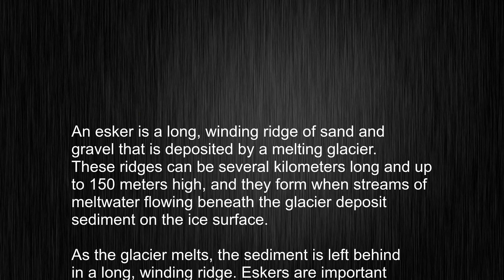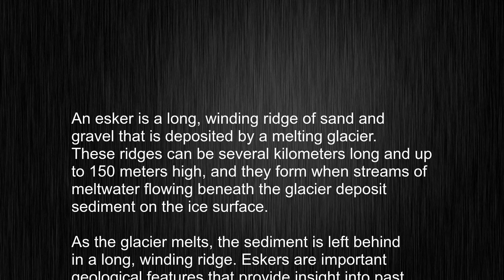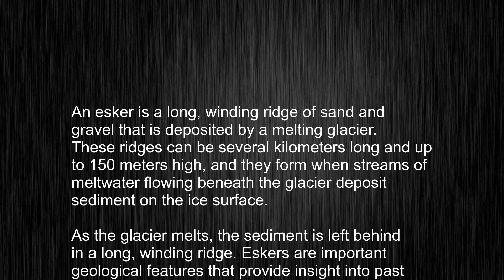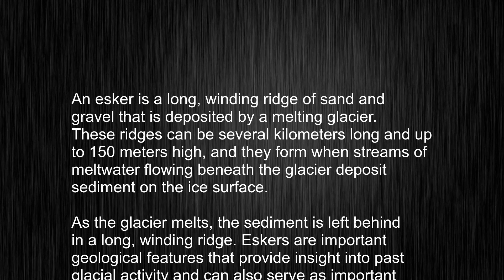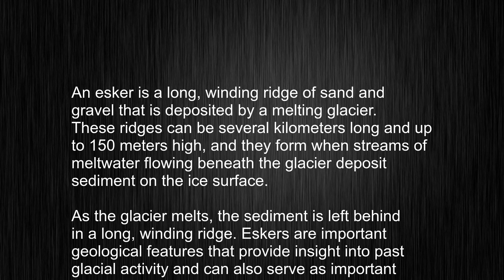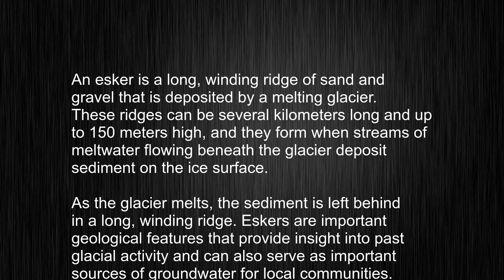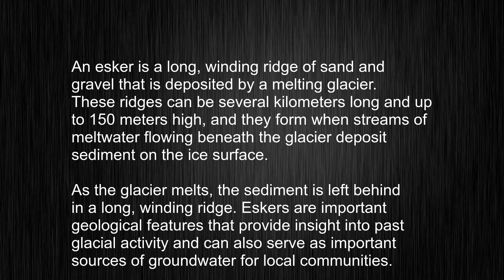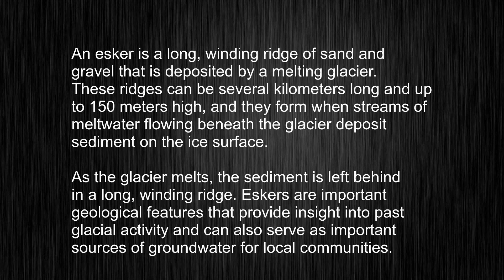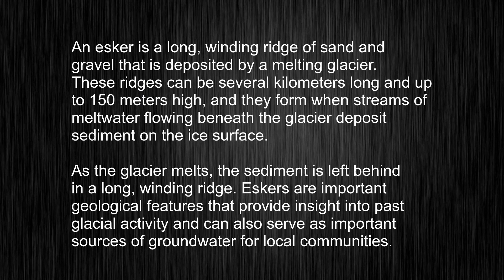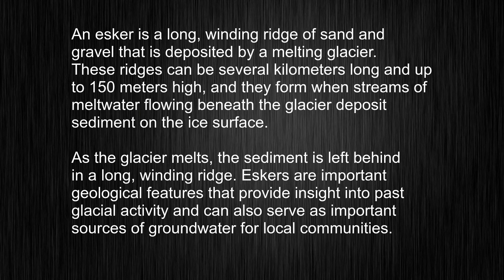An esker is a long, winding ridge of sand and gravel that is deposited by a melting glacier. These ridges can be several kilometers long and up to 150 meters high, and they form when streams of meltwater flowing beneath the glacier deposit sediment on the ice surface.